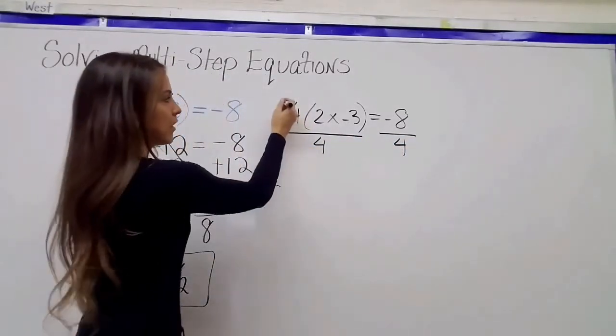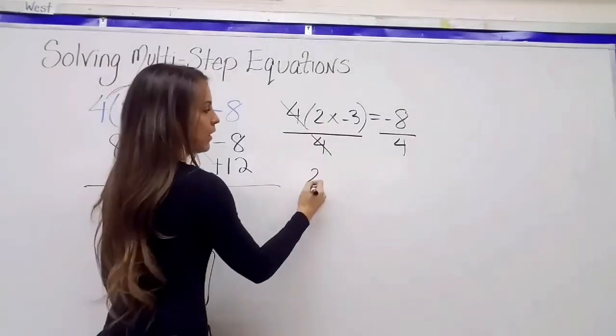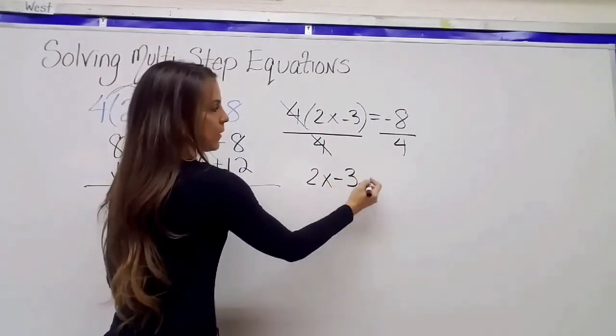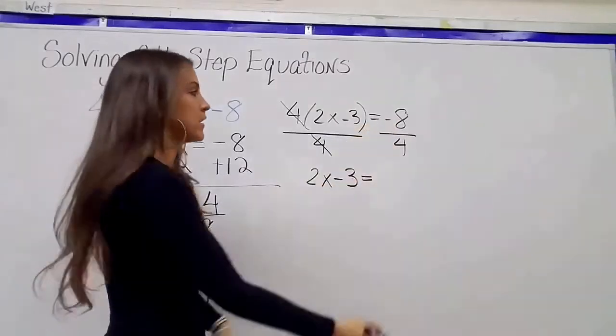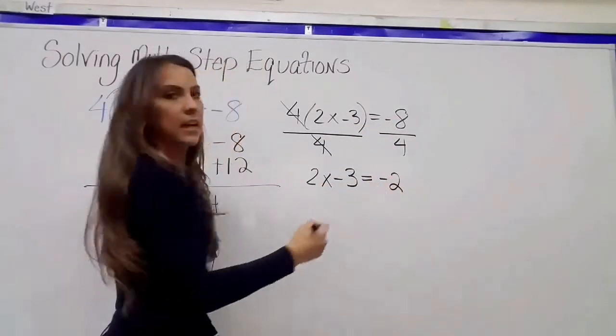So on the left, 4 divided by 4 is 1, it cancels out, and I'm left with 2x minus 3. Equals, on the right side, a negative divided by positive is a negative, and it's negative 2.